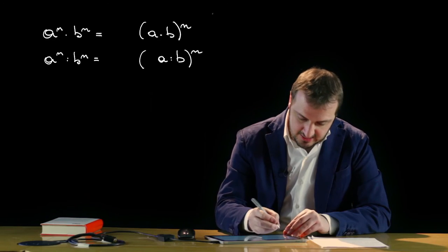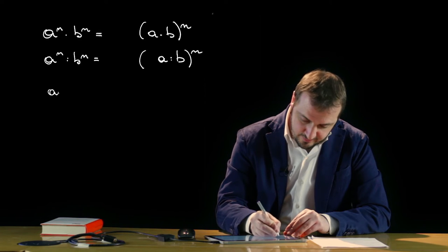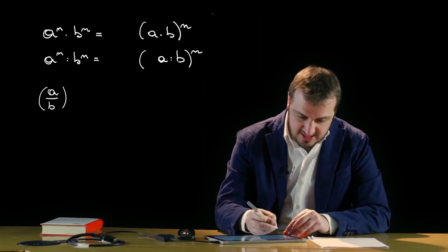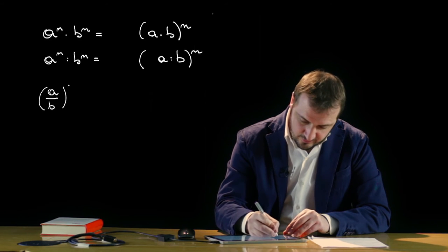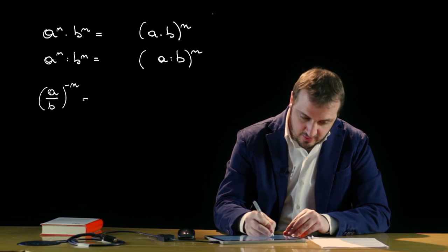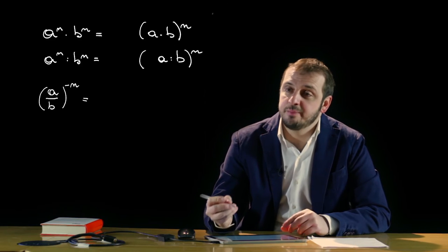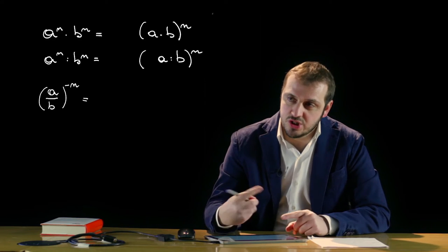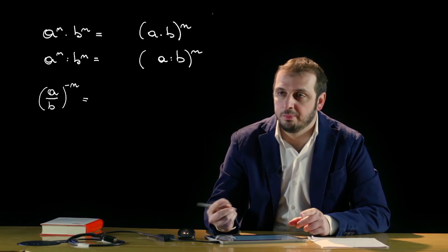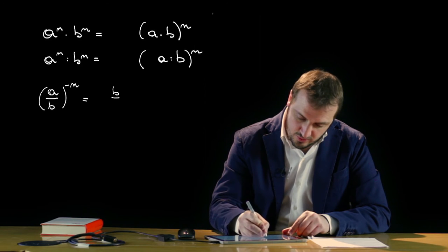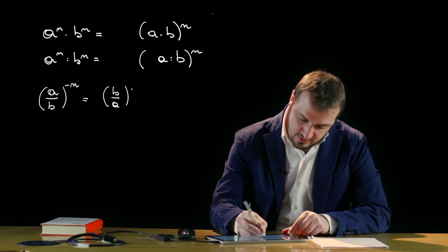Possiamo poi definire altre tipologie di potenze, le potenze caratterizzate in particolare da esponenti negativi o esponenti razionali. Le potenze caratterizzate da esponente negativo: immaginiamoci una potenza caratterizzata da una base razionale diversa da zero con un esponente negativo. Il risultato è una potenza che ha per base il reciproco della base e per esponente l'opposto dell'esponente.